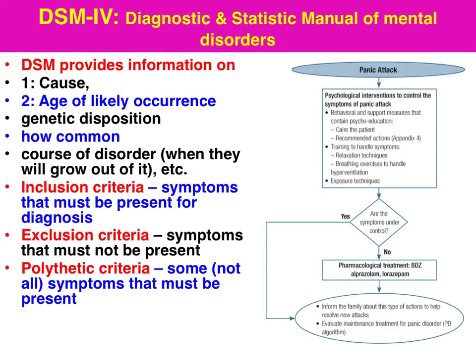The DSM provides information on possible causes of a mental disorder, age of likely occurrence — which is particularly pertinent for developmental disorders such as autism and Asperger's — and genetic predisposition. For instance, if you have two parents who have been clinically diagnosed with schizophrenia, that dramatically increases the odds of their offspring having schizophrenia.